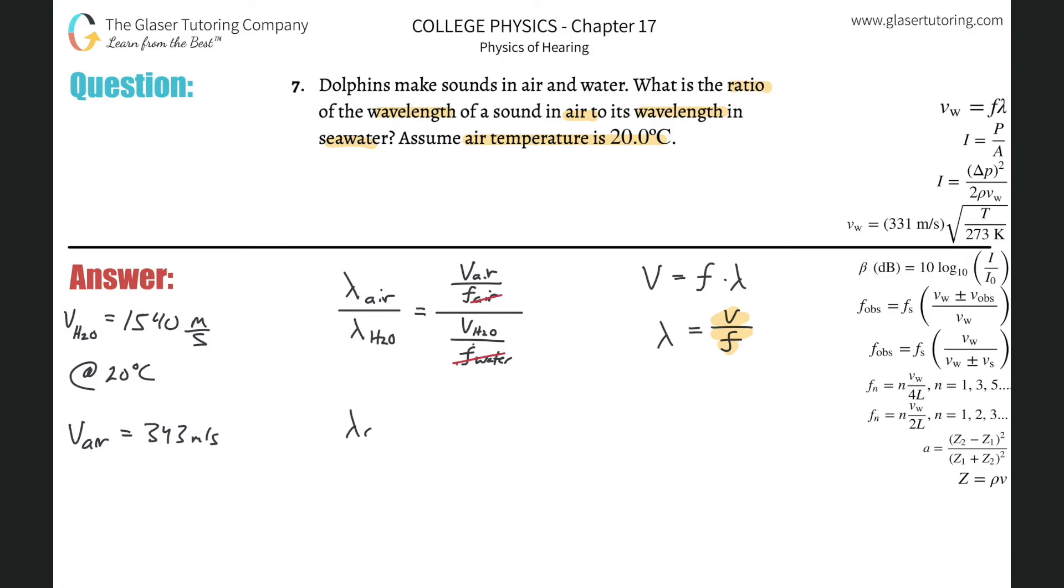And what that means now is that the wavelength in air divided by the wavelength in water will equal then the velocity in air divided by the velocity in water. And look, lo and behold, we have everything we need. The velocity in the air is about 343, and then divided by now the velocity in water. So this is 1540. Simply now find that ratio. So 343 divided by 1540.